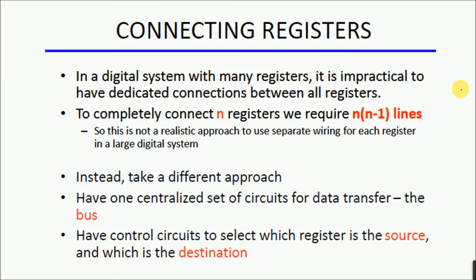Let's discuss why it is important to interconnect the different registers and different modules together and how it's done effectively. In our digital system we need to transfer information from one module to another module, from one register to another register. Those registers can be general purpose registers or special function registers, and that flow of information requires the system to have some sort of interconnections between those different modules — connections that are nothing but lines of wires connecting the inputs and outputs of different modules.